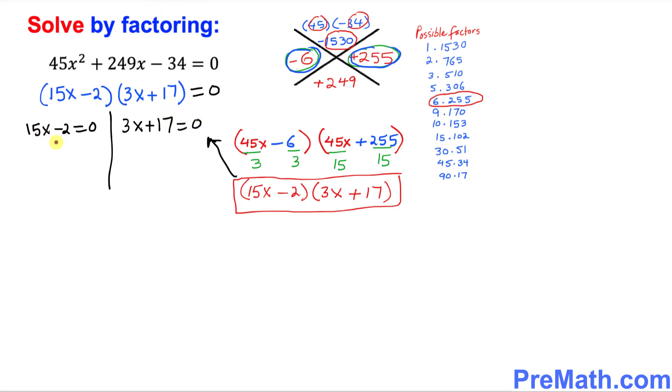Let's isolate x. I want you to just simply add 2 on both sides. So that reduces to 0. 15x turns out to be positive 2. Divide both sides by 15. So x turns out to be 2 over 15.